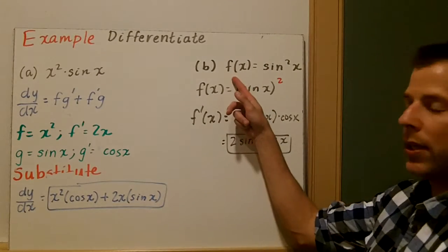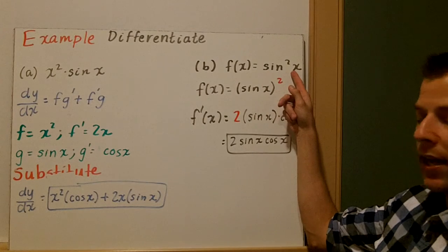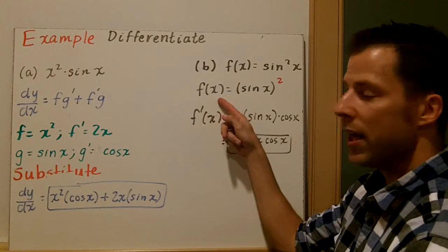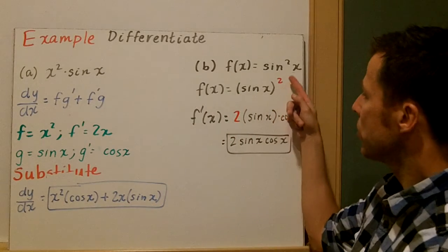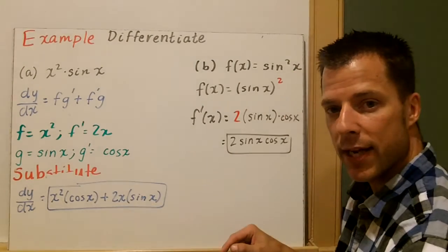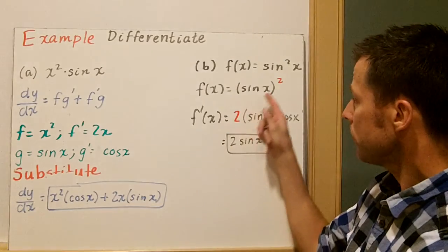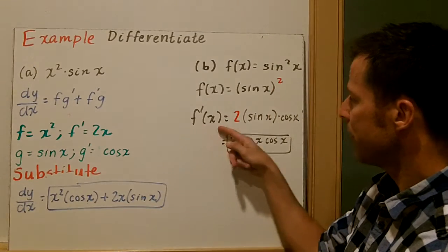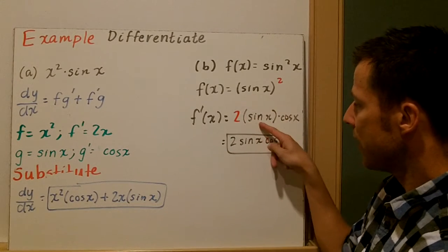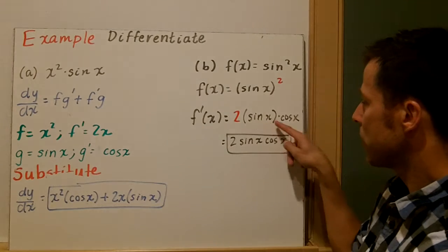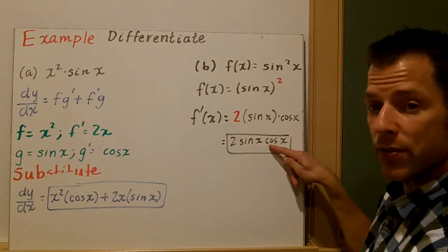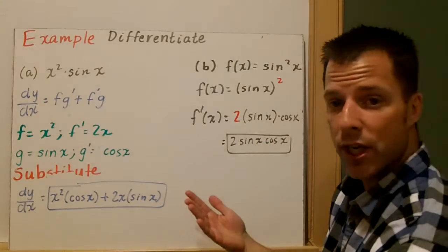In part b, we're going to differentiate sine squared of x. This is an important rule because we can rewrite this function: f of x equals sine of x, quantity squared. This property allows us, when taking sine squared x, to move that power to the outside. We're going to apply the chain rule — bring the 2 out to the front, times the inside sine of x, times the derivative of sine of x, which is cosine x. So our answer is 2 times sine x times cosine of x. We apply the chain rule here.